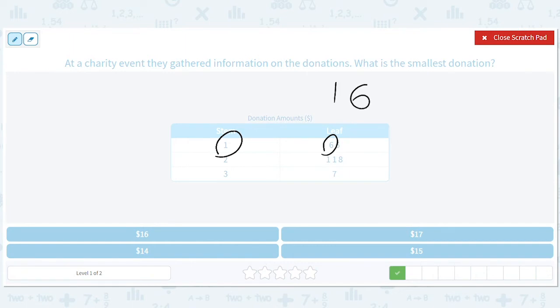Smallest leaf in the smallest stem. We wouldn't use this because even though one is smaller than six, that's 21, right? 21 is bigger than 16, so the smallest donation was $16.